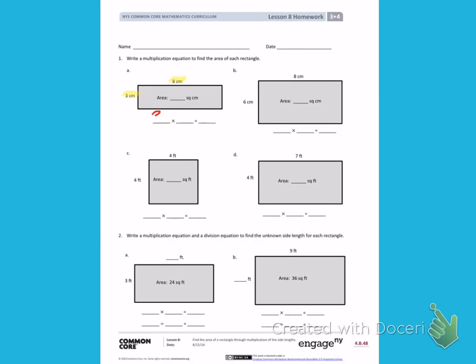So I will multiply 3 times 8. Skip counting by 8s: 8, 16, 24. 3 times 8 equals 24, giving me the area of 24 square centimeters.